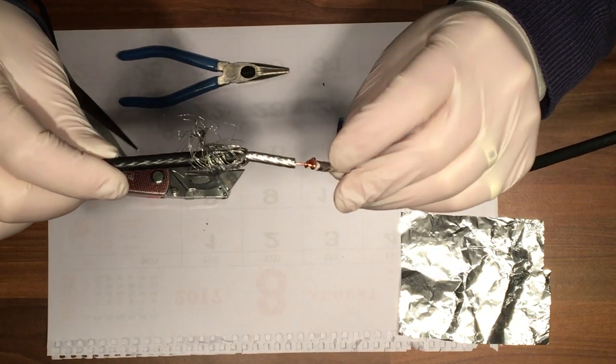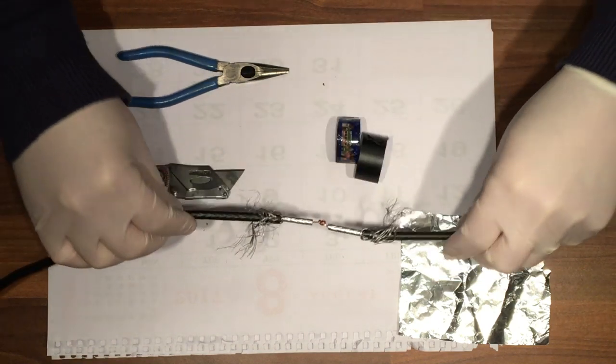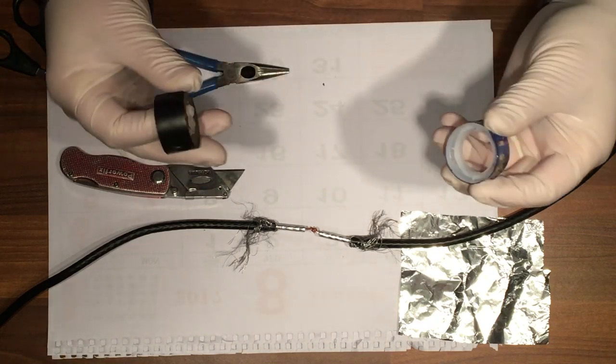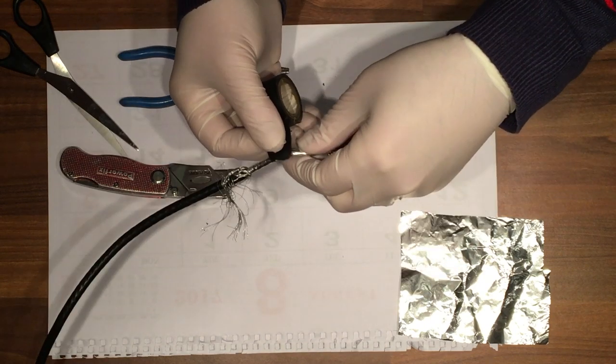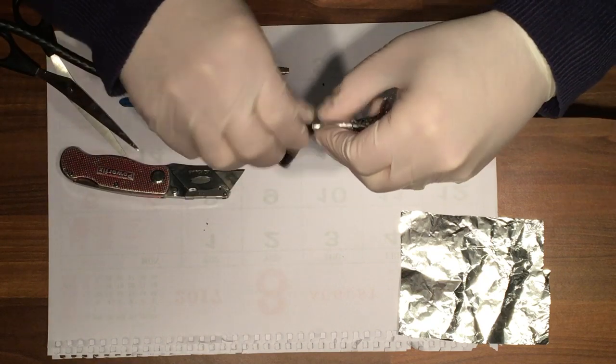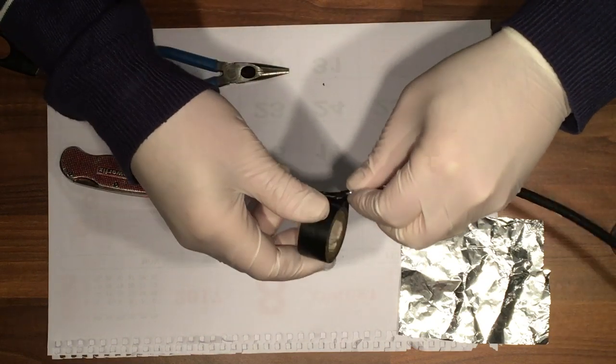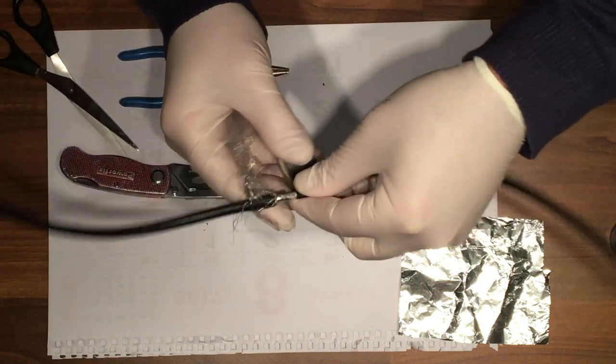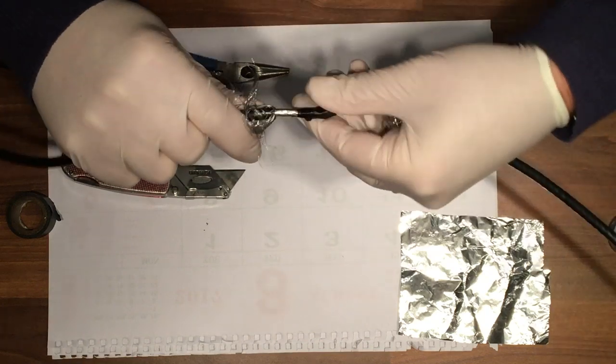We're using either insulation tape or festive tape, whichever you prefer, just seal it away from the rest of the cable. It's an insulator and it'll stop it making contact with any other metal parts. Just tear that off and run it around.